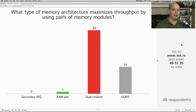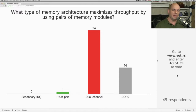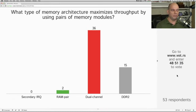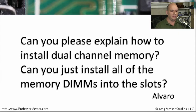That's one of those things you need to be familiar with from the A-plus objectives list — a lot of terms, and you might be asked a question that uses many of them where the ones you know aren't the right answer. The question from Alvaro was: can you explain how to install dual channel memory? Can you just install all the memory DIMMs into the slots? Well, one thing to keep in mind is it's not just dual channel.